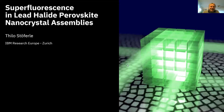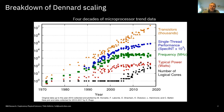Today I want to present our work that we recently did on lead halide perovskite nanocrystals. The motivation for our work comes from this trend curve for microprocessors showing key metrics. For example, the orange triangles show the number of transistors that has been doubling every two years over the last five decades — the so-called Moore's Law, still holding up even in 2020.